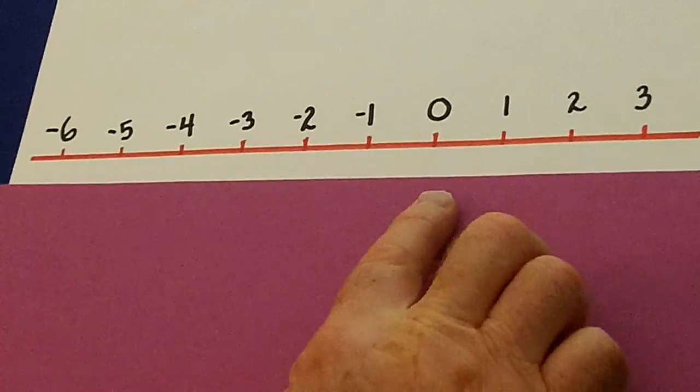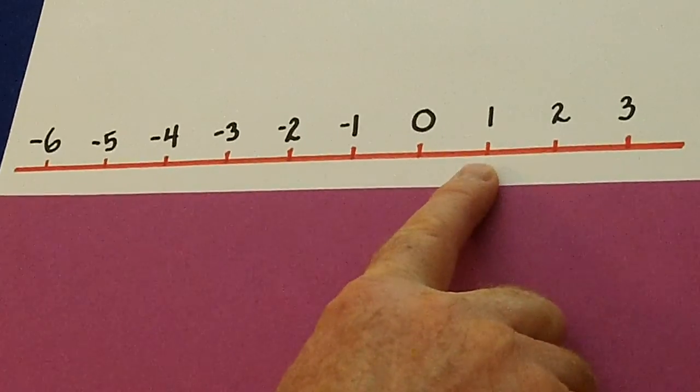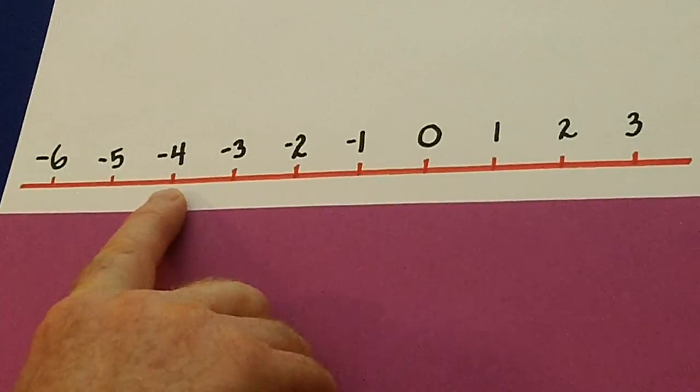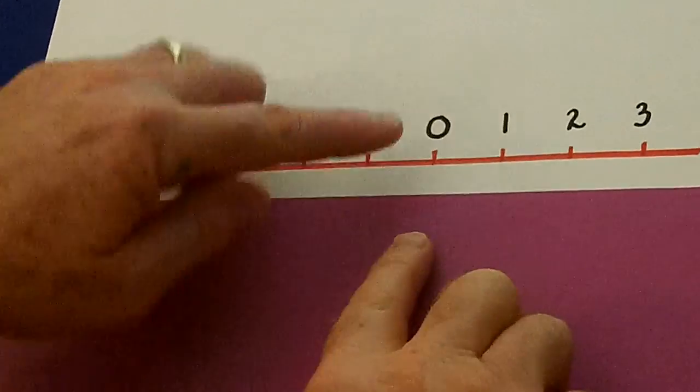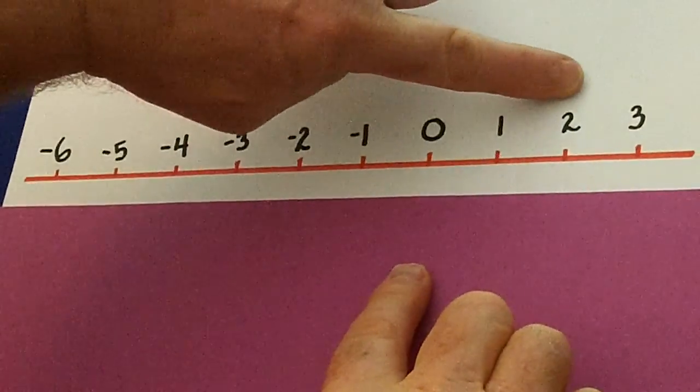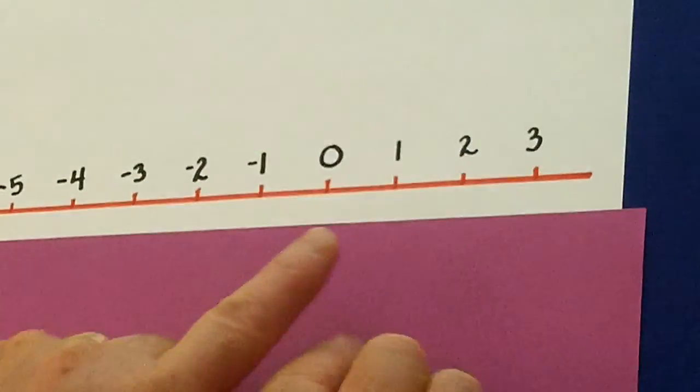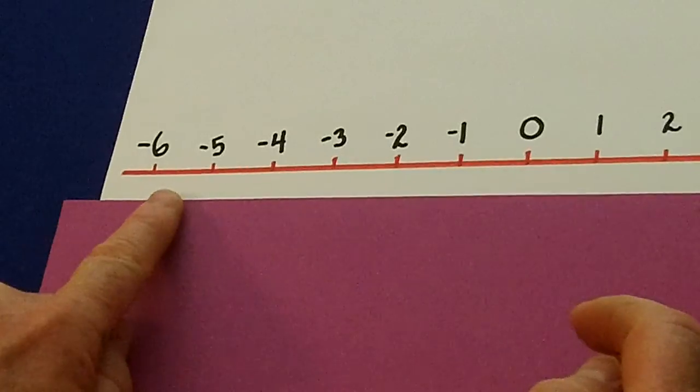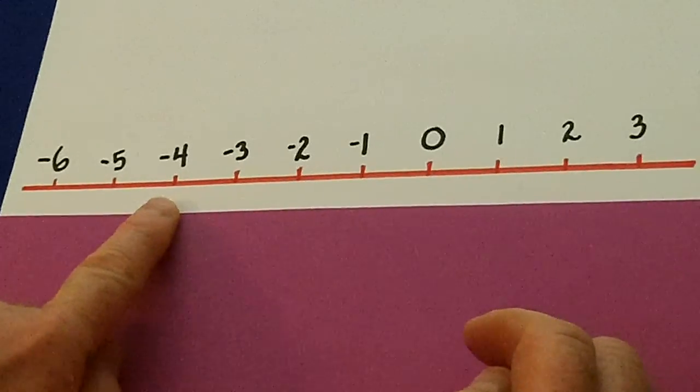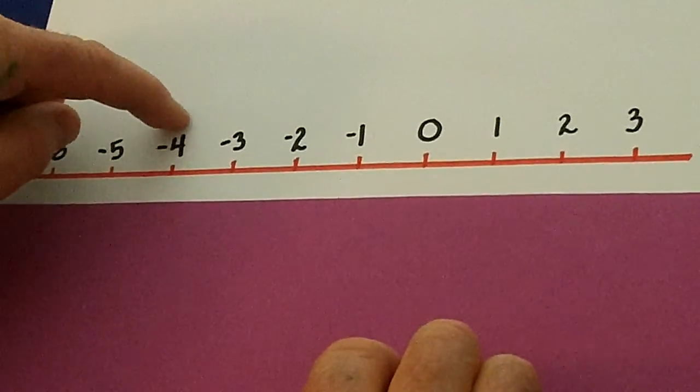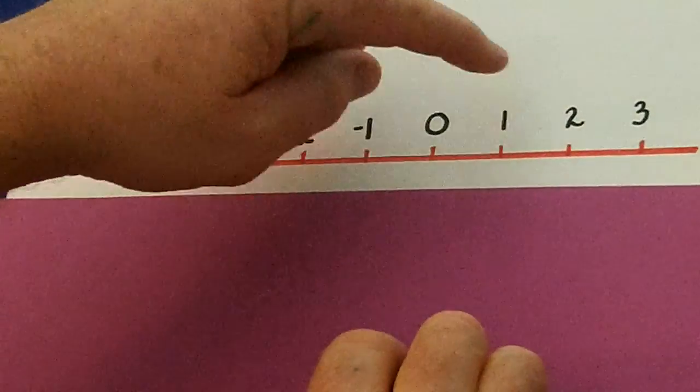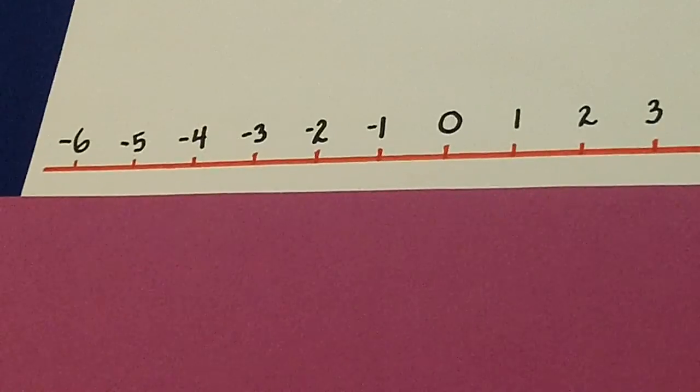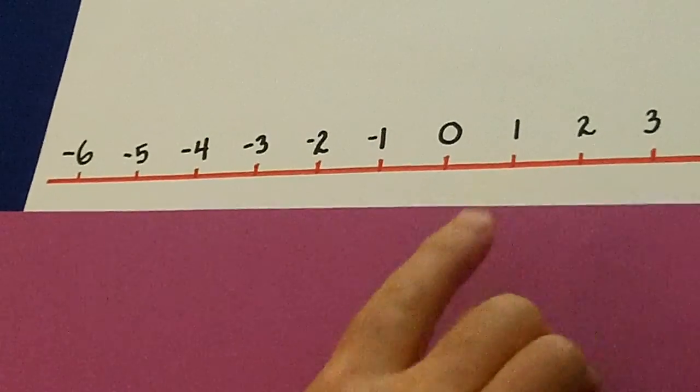Sometimes when we compare numbers, we would say that 1 is bigger than negative 4. Remember, numbers get bigger as they go to the right and they get smaller as they go to the left. So, a negative 4, even though that 4 is bigger than the 1 by itself, because it's a negative 4, it's way on this side of 0. So, it's much smaller than the 1.